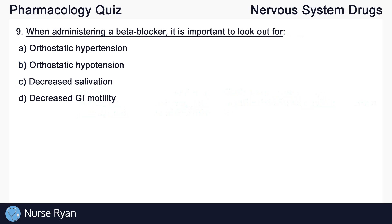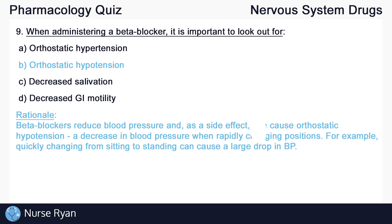Question number nine: when administering a beta-blocker, it is important to look out for? The answer is B, orthostatic hypotension.